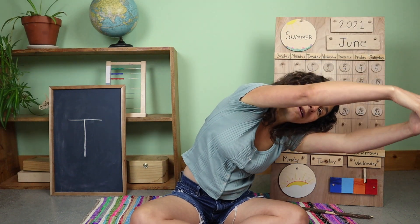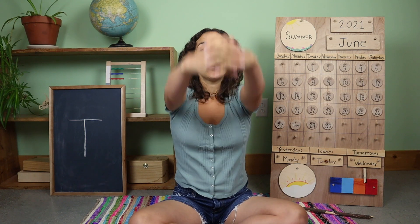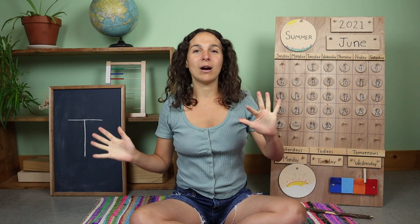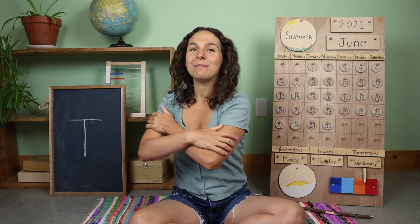Stretch the circle up over your head and bring it to one side, over to the other side, one more time at the top, and we'll bring the circle back down and sing together. Good morning, dear earth. Good morning, dear sun. Good morning, dear rocks and flowers, everyone. Good morning, dear beast and birds in the trees. Good morning to you and good morning to me. Good morning, friends.